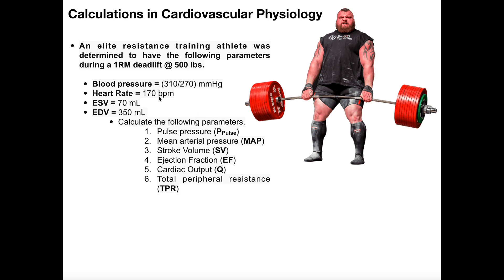We've got a heart rate of 170 beats per minute, an end systolic volume of 70 milliliters, and an end diastolic volume of 350 milliliters. And we want to calculate the following six parameters: pulse pressure, mean arterial pressure, stroke volume, ejection fraction, cardiac output, and total peripheral resistance — which will need both the cardiac output and mean arterial pressure to calculate.